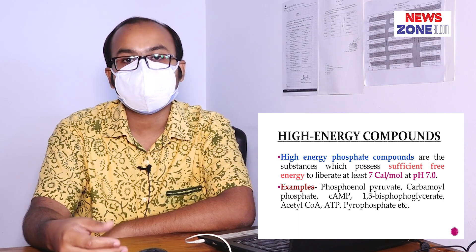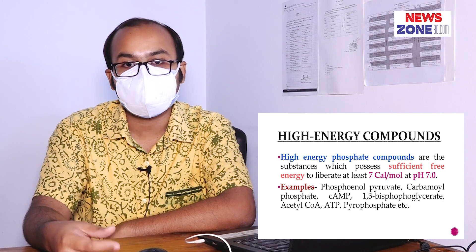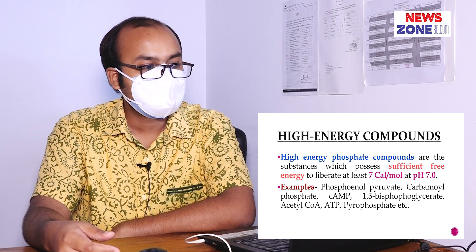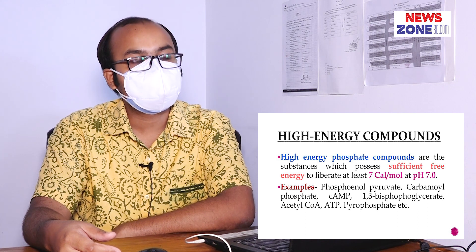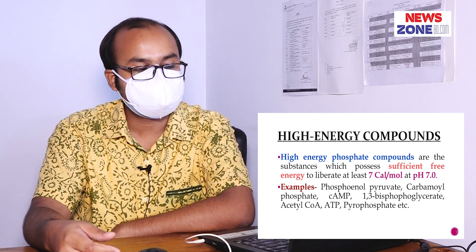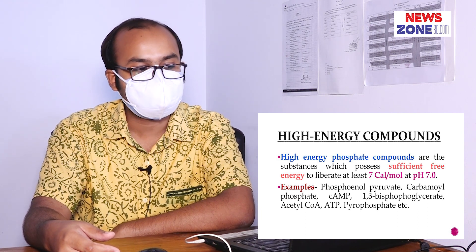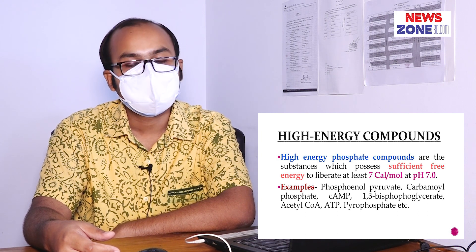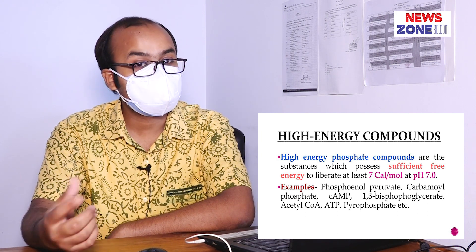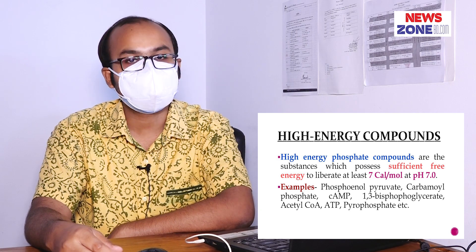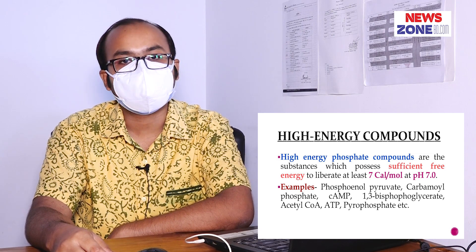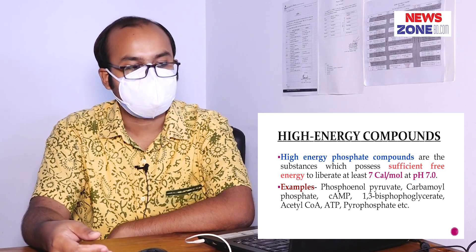The high energy phosphate compounds — most importantly asked in every viva exam — are: phosphoenolpyruvate, carbamoyl phosphate, cyclic AMP (cyclic adenosine monophosphate), 1,3-bisphosphoglycerate, acetyl-CoA, adenosine triphosphate (ATP), and pyrophosphate.